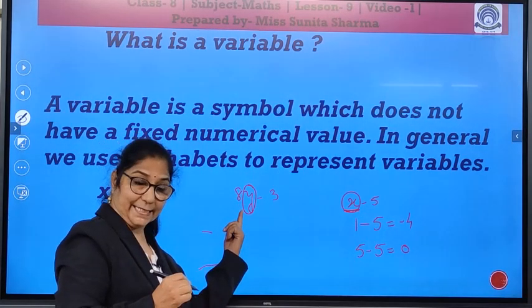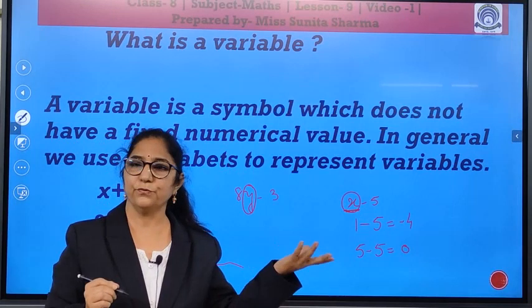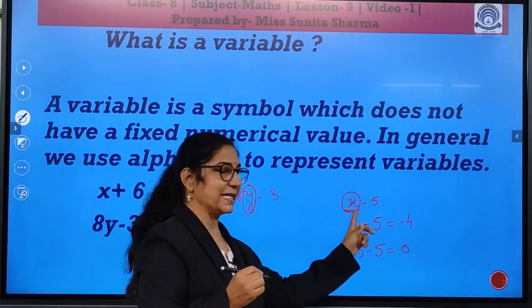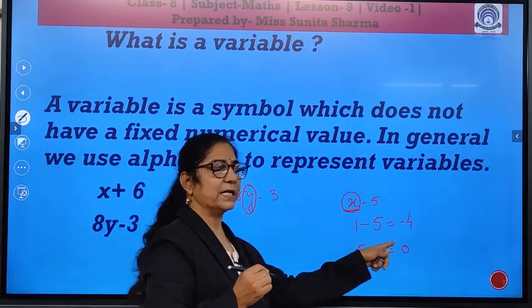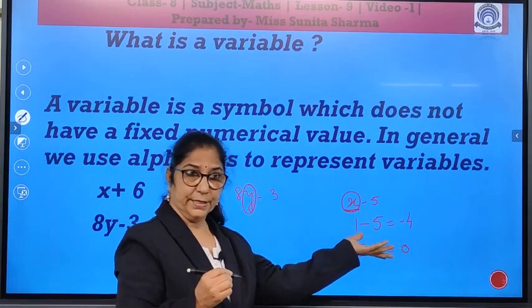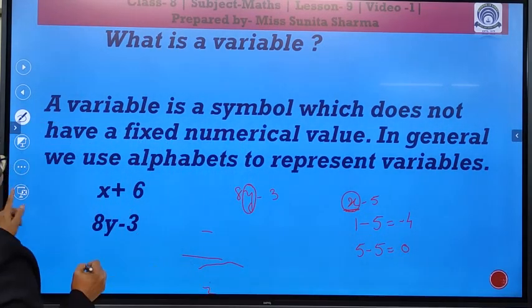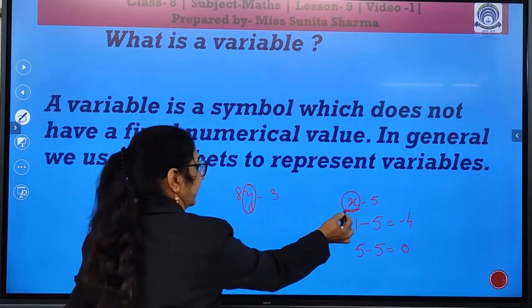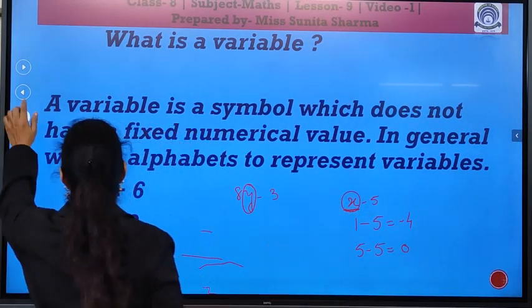I give you here, it is given 8y minus 3. So, y is a variable. And here the value is given, numerical value is 8. It can have any value. It can have 2, 4, 3. Likewise, I told you here, x minus 5. So, it is 1 minus 5. You can take any value. So, variable is a symbol which does not have a fixed numerical value. Here, no fixed numerical value.